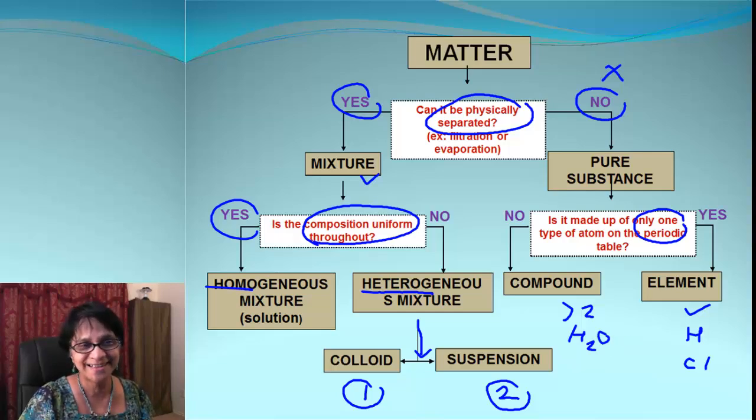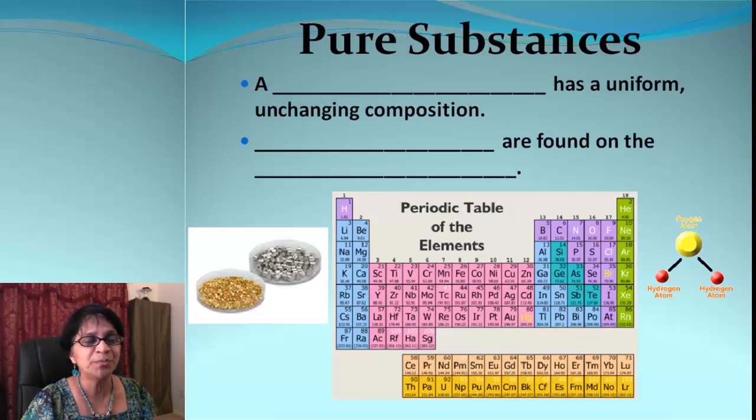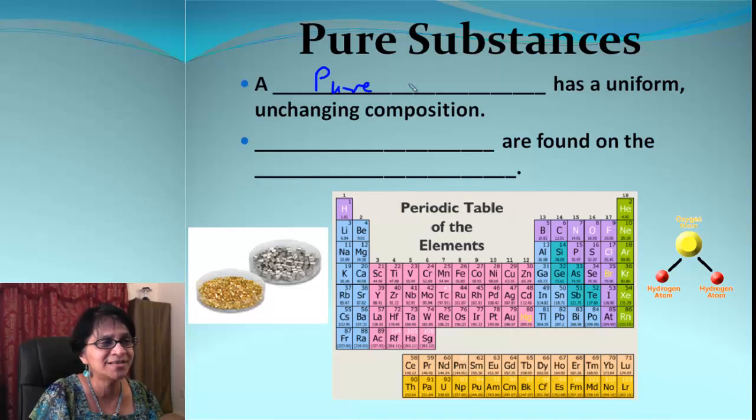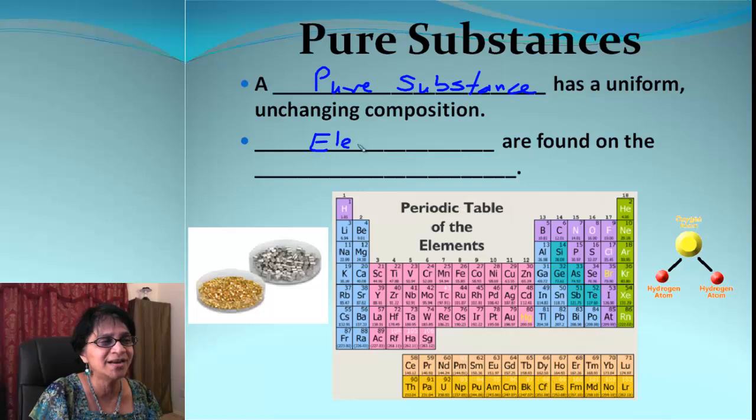So let's move on and find out more about matter. Let's begin with pure substances. So the pure substance is something we know has a uniform and unchanging composition. Out of them, elements is one of the pure substance. And where do we find the elements? We find those on this beautiful chart which you have here, which is called the periodic table.